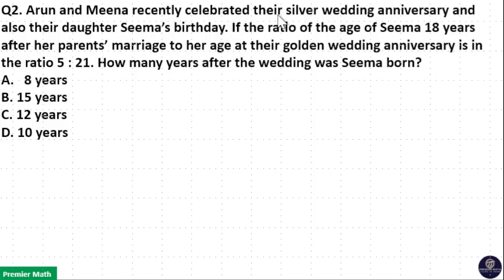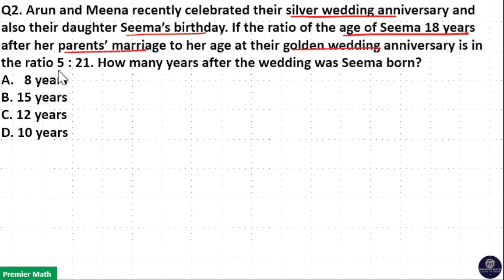Harun and Meena recently celebrated their silver wedding anniversary and also their daughter Sima's birthday. If the ratio of age of Sima 18 years after her parents' marriage to her age at their golden wedding anniversary is in the ratio 5 to 21, how many years after the wedding was Sima born? Here, golden means the 50th year and silver means the 25th year.